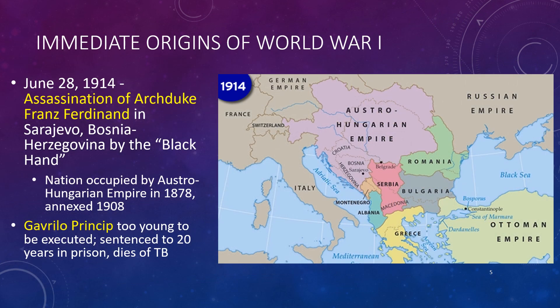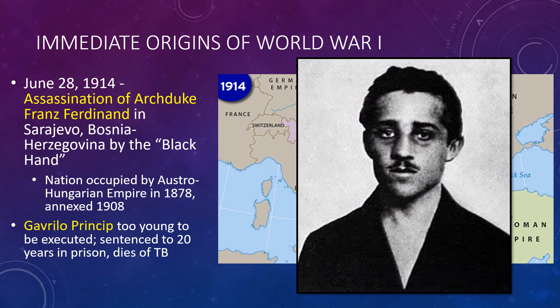The immediate cause of World War I was the assassination of Archduke Franz Ferdinand by Gavrilo Princip, a member of the Black Hand terrorist group that wanted to see the recently annexed Bosnia and Herzegovina reunited with other ethnic Serbs in Serbia. At 18, Gavrilo Princip was too young to be executed, so he received a maximum sentence of 20 years in prison, dying of tuberculosis at age 23 after losing an arm. For the record, and contrary to urban legend, Princip was not eating a sandwich when the Archduke's car rolled past.